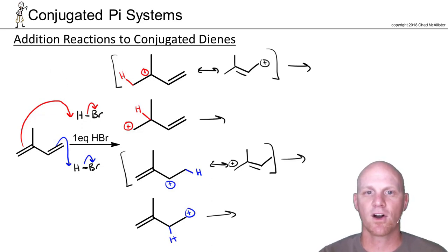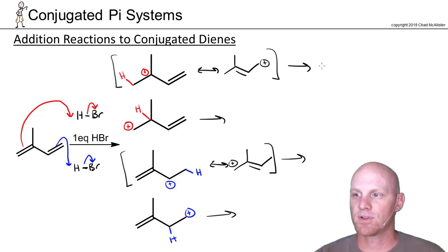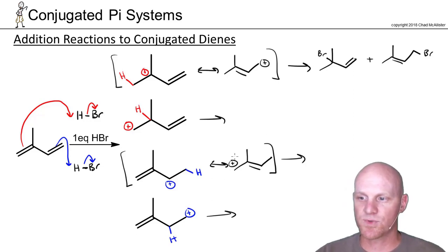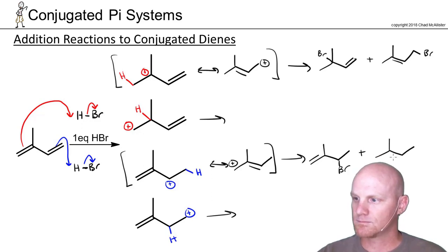If bromine adds where the carbocation is — looking at the resonance-stabilized ones — the positive charge is shared between two locations, so bromine could end up at either location, giving two possible products from that one carbocation. Similarly, the other resonance-stabilized carbocation also allows bromine to add at either of the two shared positions, again yielding two possible products.